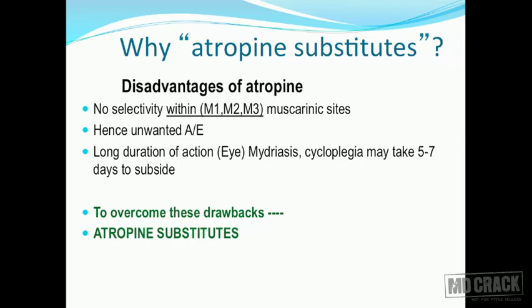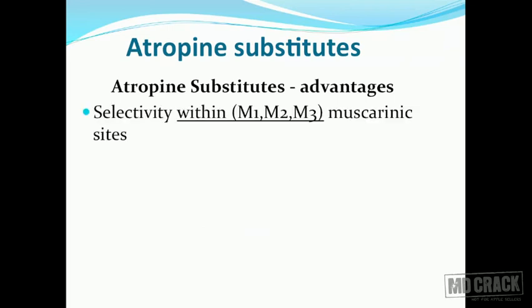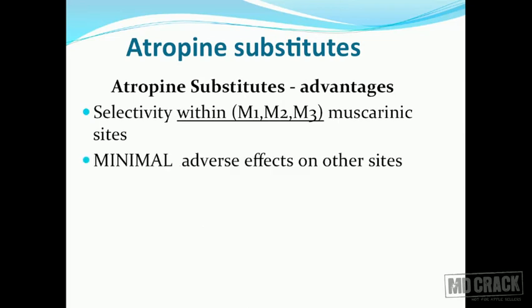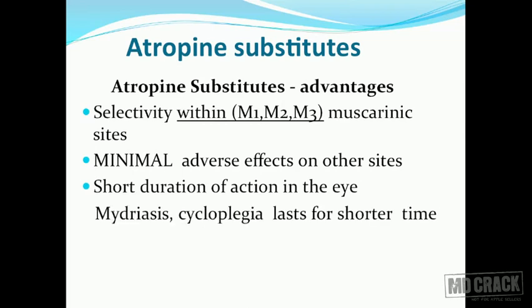To overcome these drawbacks, we have synthesized atropine substitutes - derivatives of atropine. The advantages of atropine substitutes: number one, they are comparatively selective within the muscarinic receptor sites. Some atropine substitutes mainly act on M1 receptors, others mainly on M3 receptors, resulting in minimal adverse effects on other sites. Additionally, atropine substitutes used in the eye produce mydriasis and cycloplegia for a shorter duration, so patients undergoing ophthalmologic examination don't suffer from blurriness of vision and photophobia for a prolonged period.